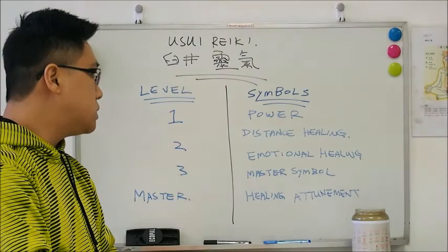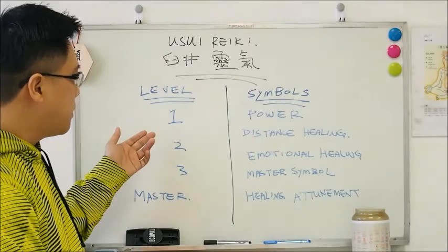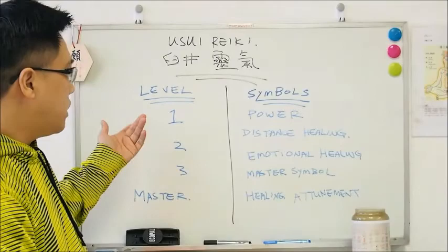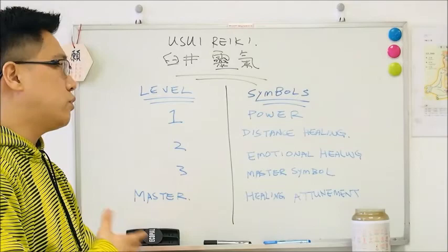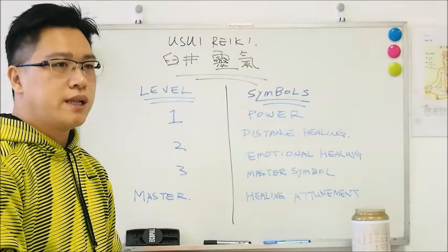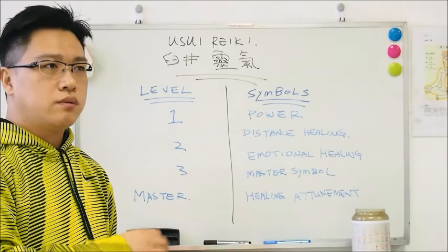Nowadays you find a lot of Reiki masters have classes for different levels — level 1, level 2, level 3, and master level. You start learning Reiki from level 1 and normally get two to three attunements per level. During those classes you practice how to feel the energy and get attuned to it.